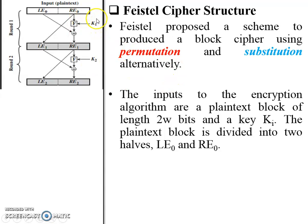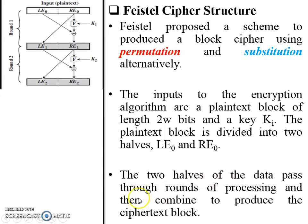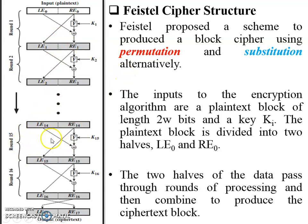Different sub-keys are applied to each round in Feistel cipher structure — K1 is applied in the first round, K2 in the second round, and so on. The two halves of the data pass through rounds of processing and are then combined to produce the ciphertext block. RE0 is applied to the round function along with the key, XORed with LE0 to generate RE1, and RE0 is directly passed as LE1. There are 16 rounds performed in total.